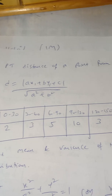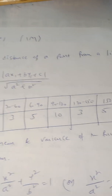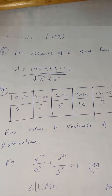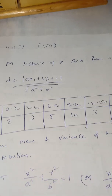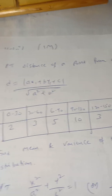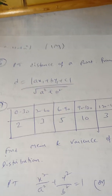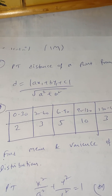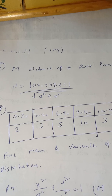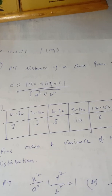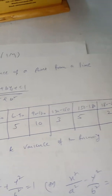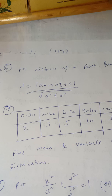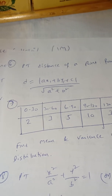Next is a straight lines question for 5 marks: prove that the distance of a point from a line is D = |Ax₁ + By₁ + C| / √(A² + B²). This is a very important 5-mark question. You can draw the diagram and write the steps for this question.